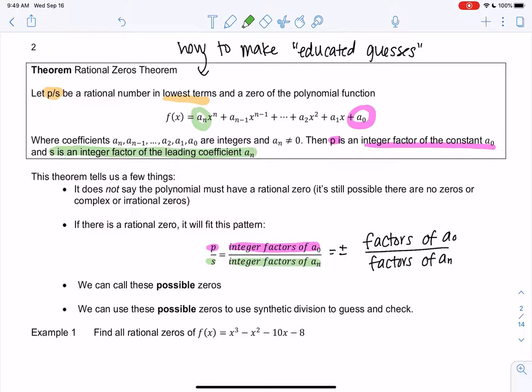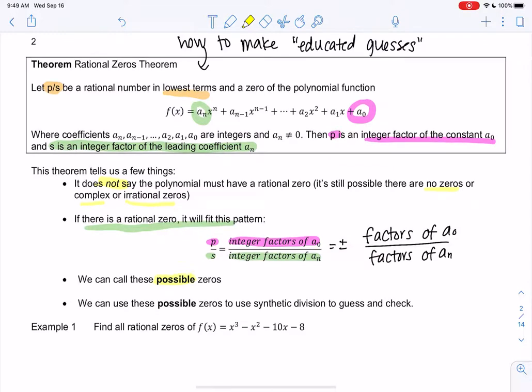And what this tells us is that if we have a rational number as a zero, it will fit this pattern. It doesn't mean there is one. It just means if there is one, it will fit this pattern. It does not tell us for sure that there is one. It's still possible that we have no zeros or we have complex or even irrational zeros. So irrational doesn't fit a fraction pattern. So that'll be like square root 5. So we call these possible zeros.